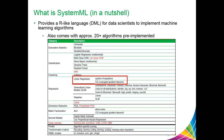DML is expressive enough to cover a broad class of algorithms, such as descriptive statistics, classification, clustering, regression, matrix factorization, dimensionality reduction, survival models, and deep learning. These algorithms are prepackaged with SystemML and available on GitHub.